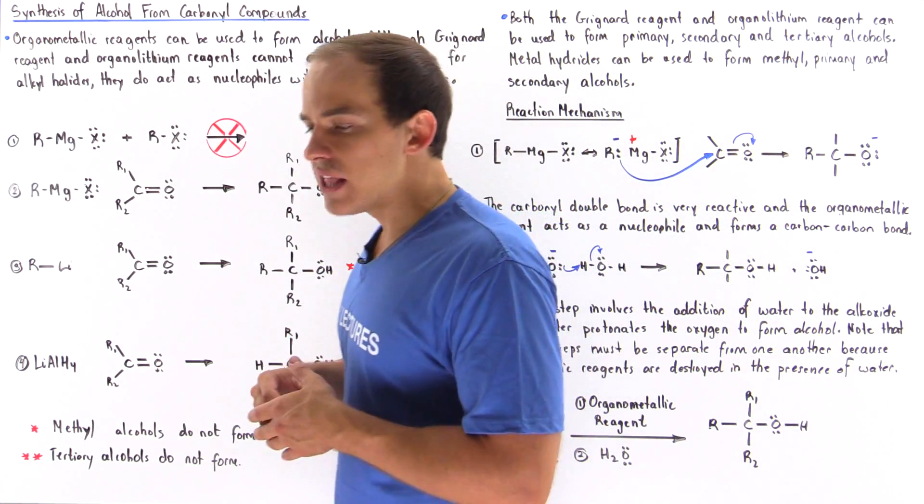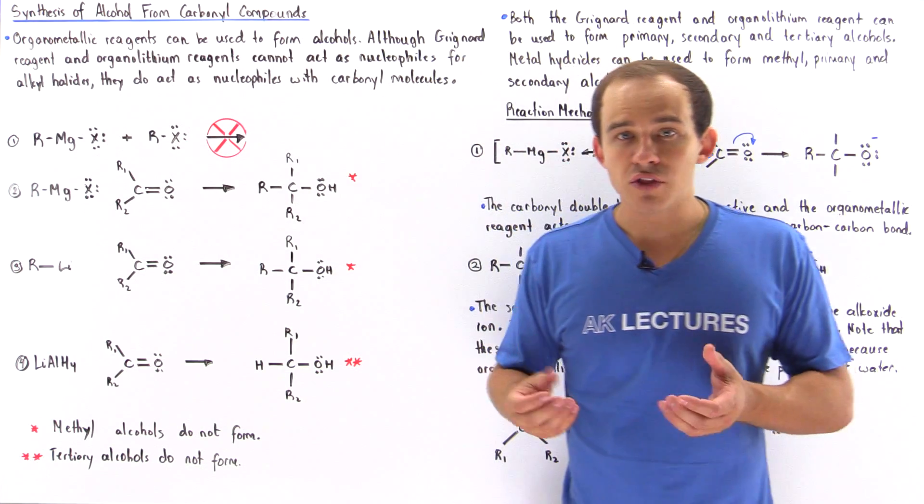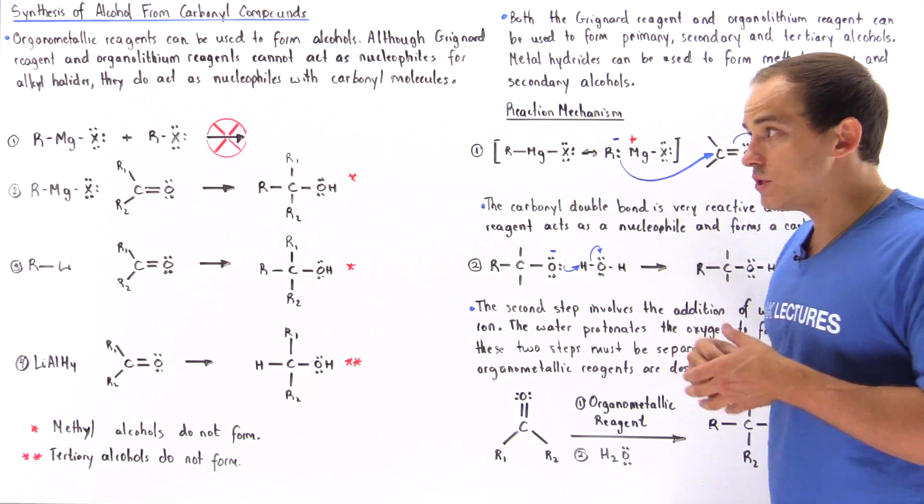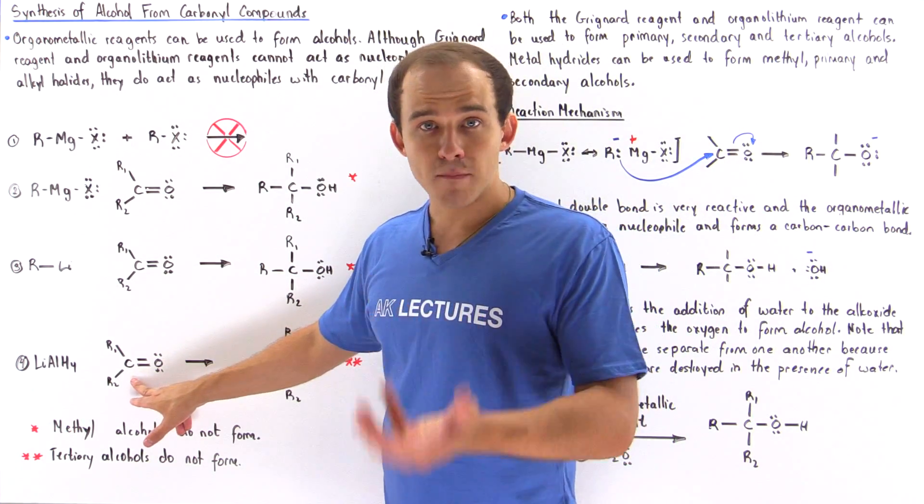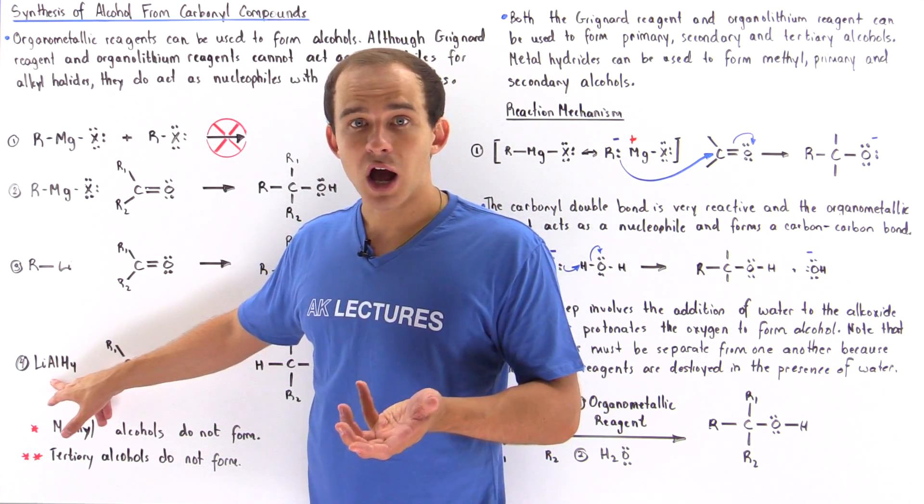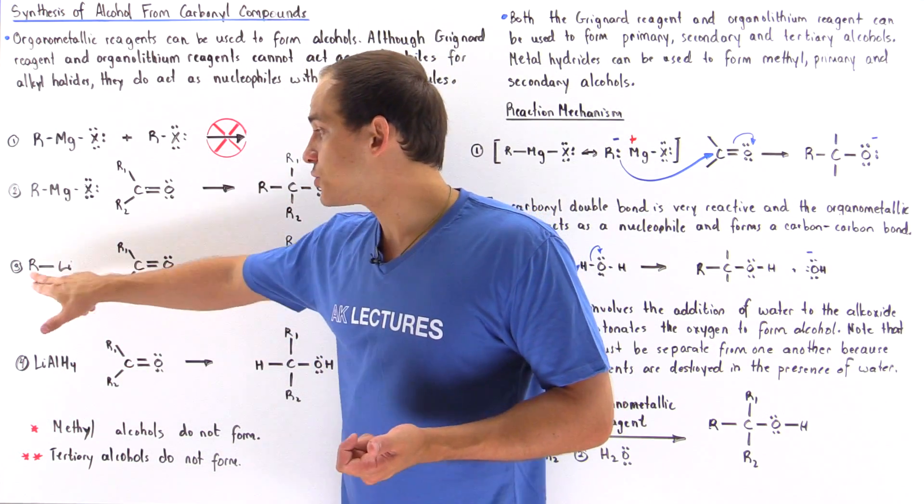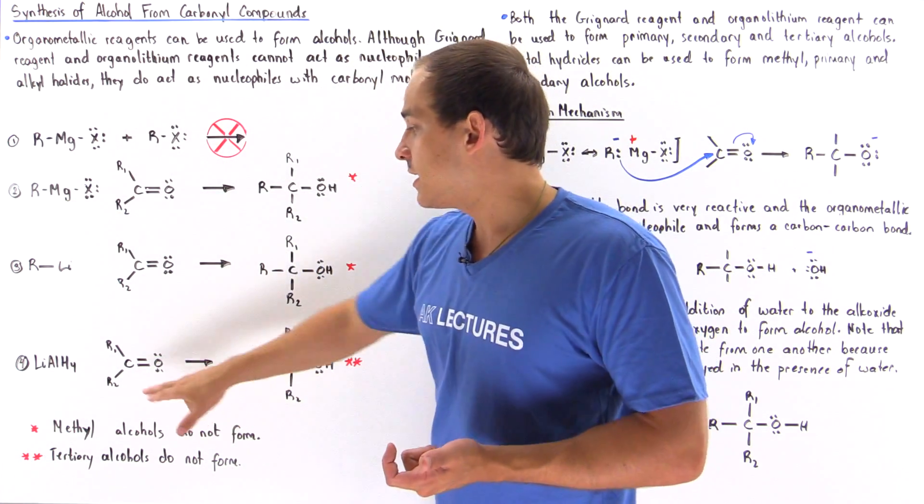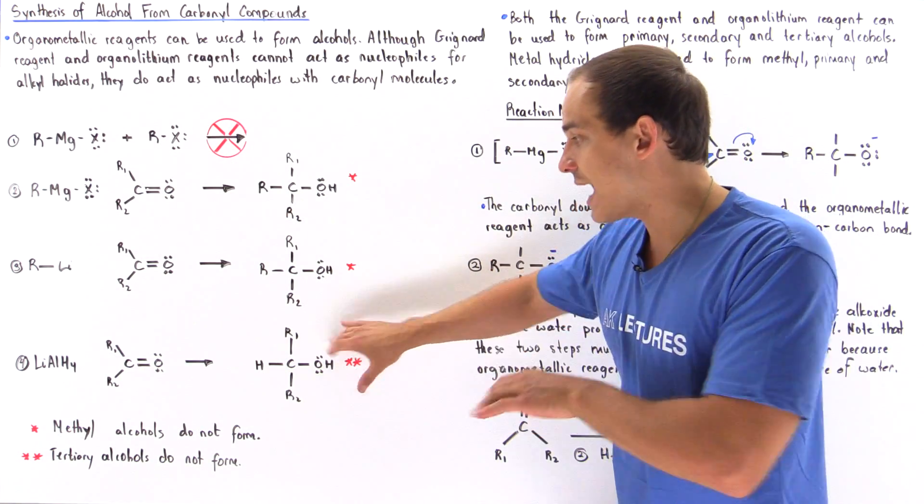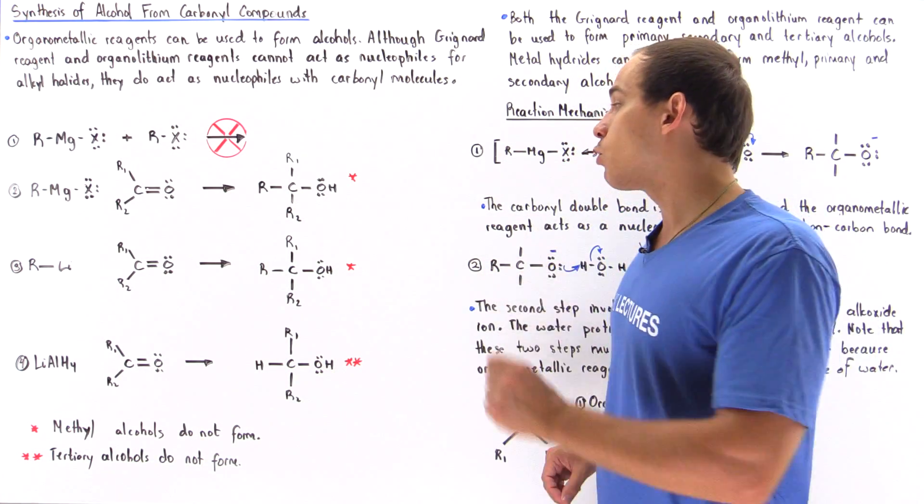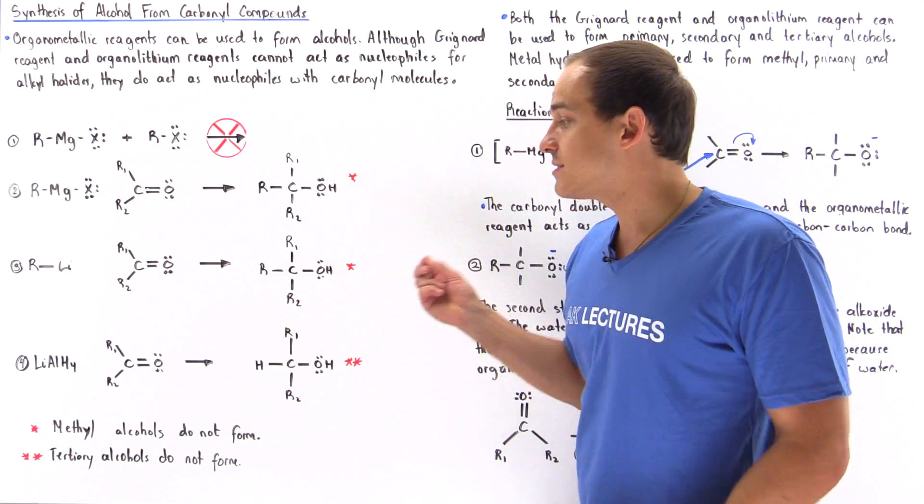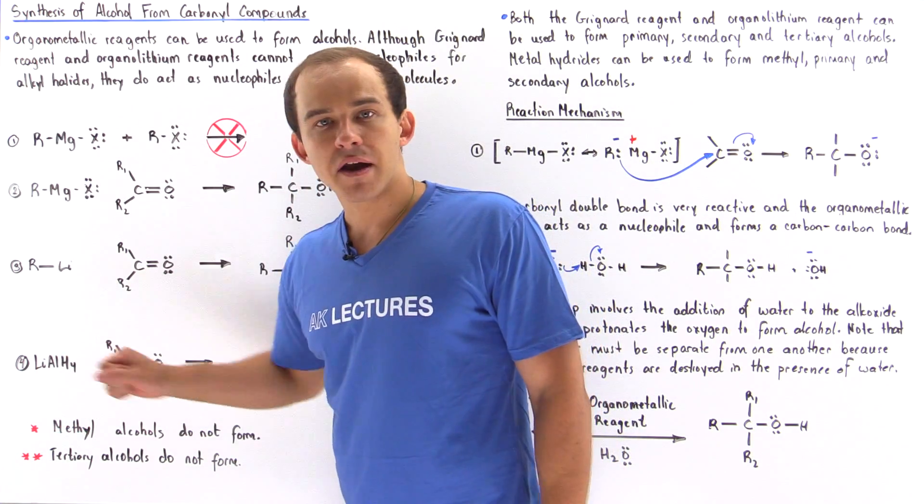Now what about methyl alcohols? How can we form an alcohol that contains a carbon that has three H atoms? Well, one way we can do it is by mixing formaldehyde with our lithium aluminum hydride, our metal hydride. So metal hydrides, just like organometallic hydrides, can be mixed with carbonyl molecules to produce our alcohol compounds. But in this case, we cannot ever produce our tertiary alcohols. And that's because at least one of these groups has to be an H group that comes from this metal hydride.